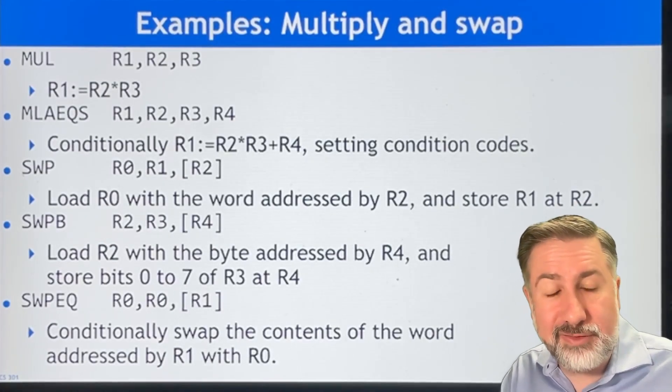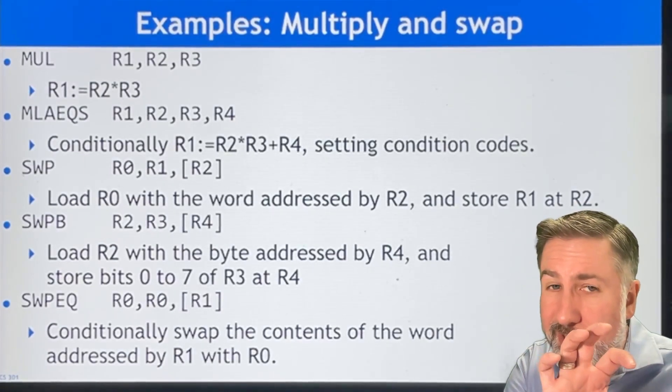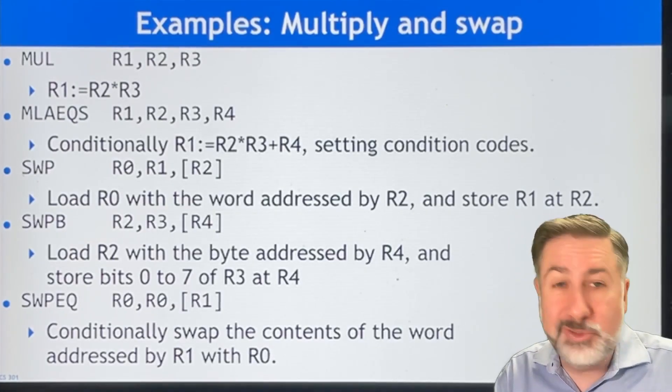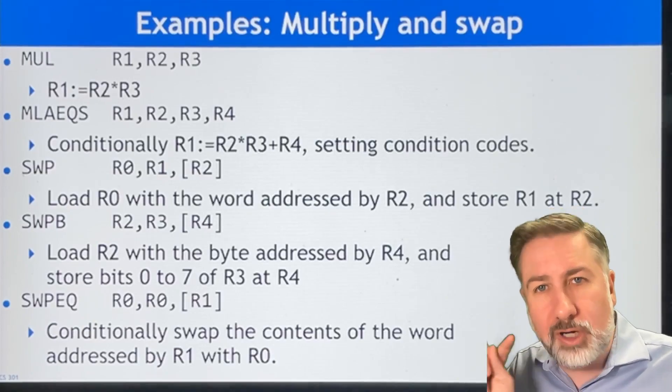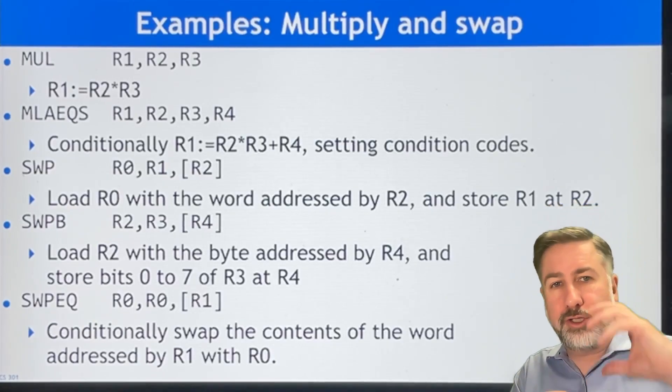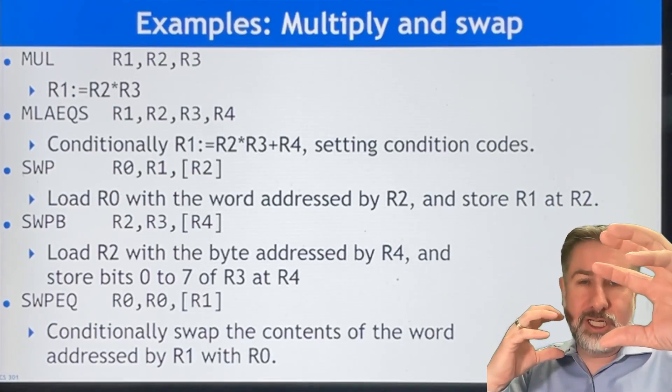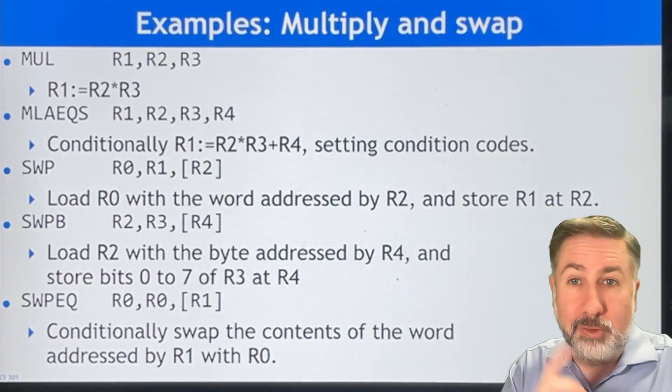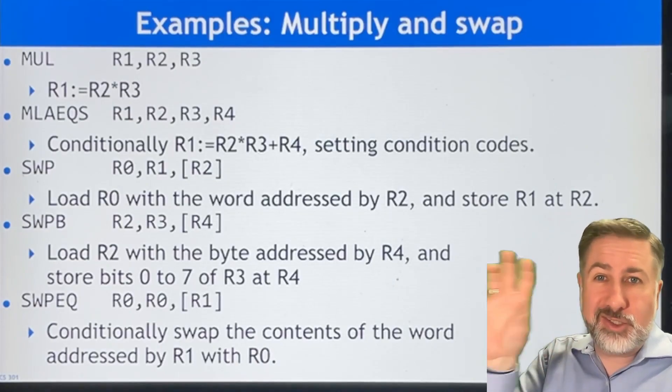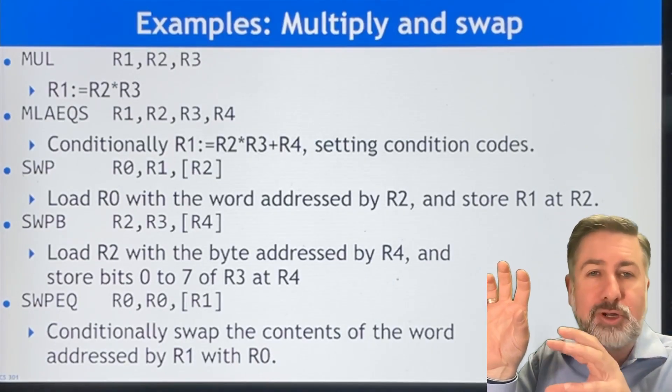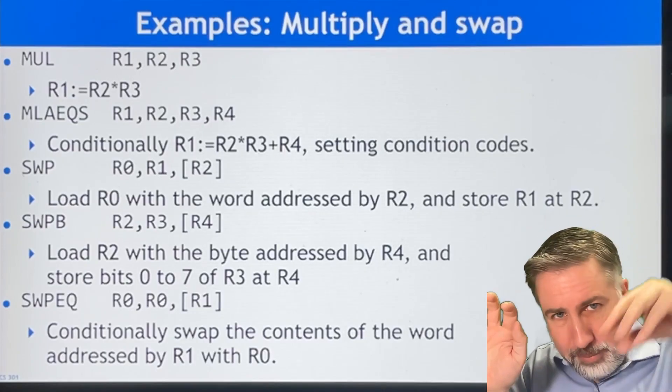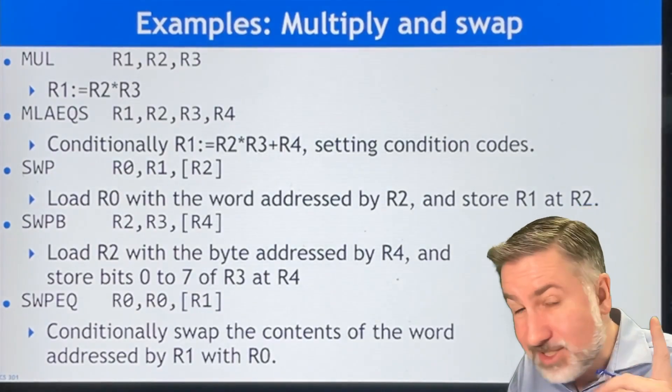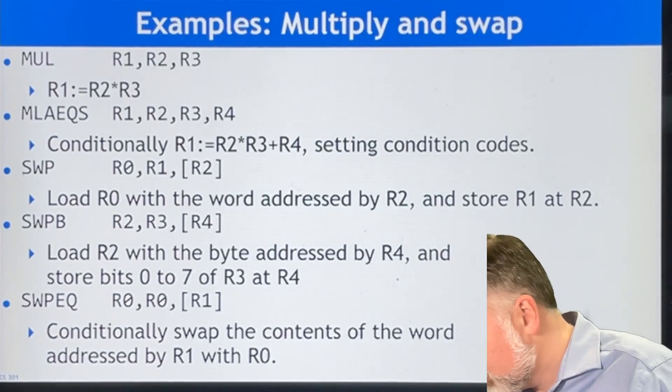That's going to take data from a register, put it into memory, and then take whatever was at memory and put it into a different register. You could use the same register, right? If you had R0, R0, R2, then you're just going to take whatever's in memory and whatever's in your register and just switch them. But with this one, we're taking R0, we're taking the memory, putting it in R0, and then we're taking R1 and putting it in memory. So different registers in the register file, same address. And it's got to be the same address.